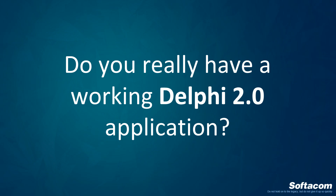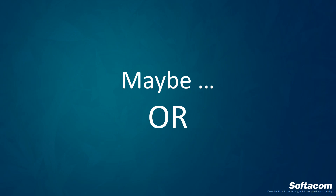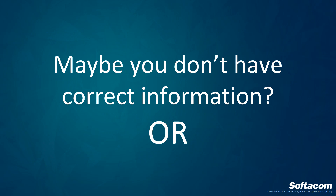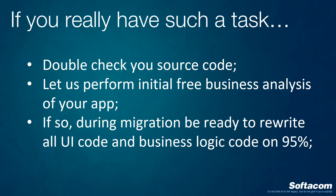And if we do not have such an operating system, do you really think you can have a working Delphi 2 application? That is a really good question. Maybe you don't have correct or enough information about your development tool, or maybe it's a different version — version 2000 or similar. But if you really have such a task, you have to double-check your source code. You have to check the Delphi version — you can find this information in the project file. Just send us the project and let us perform an initial free business analysis of your application.